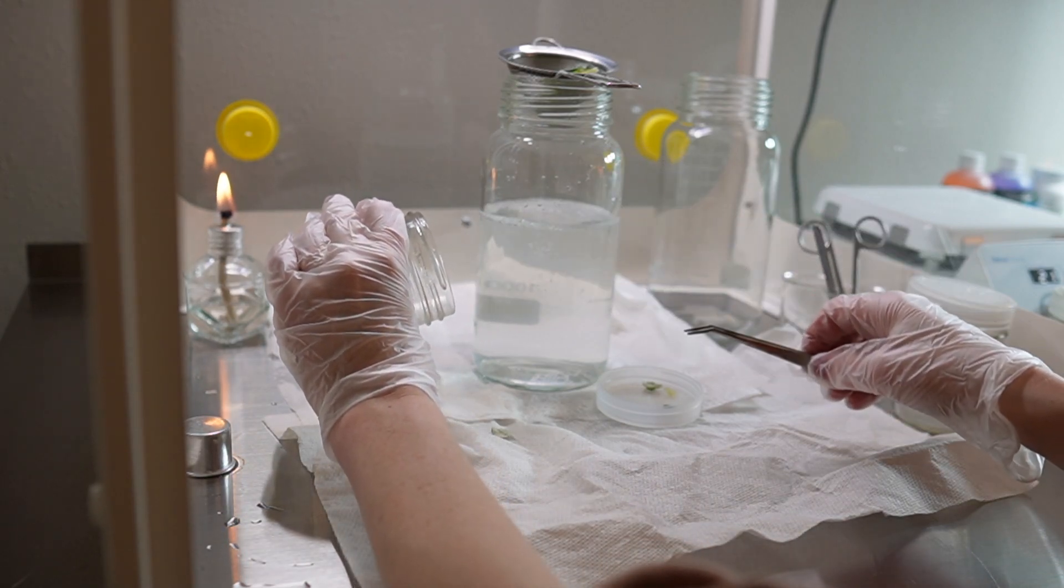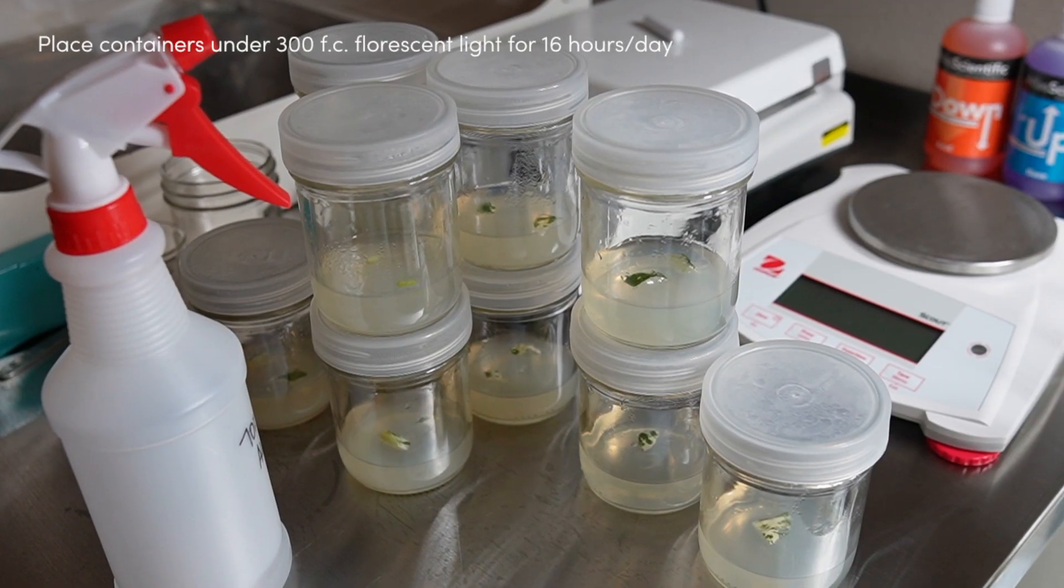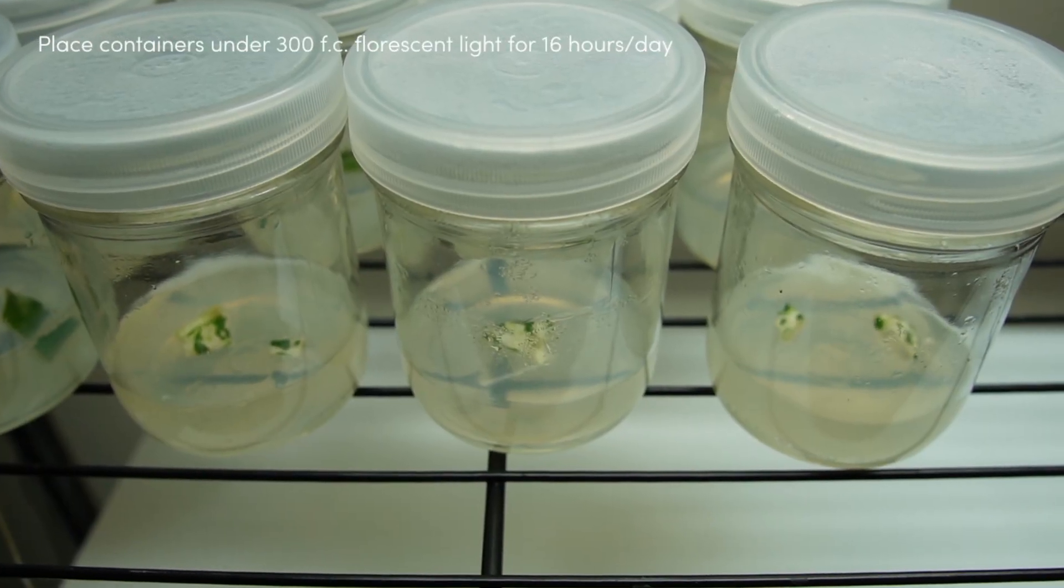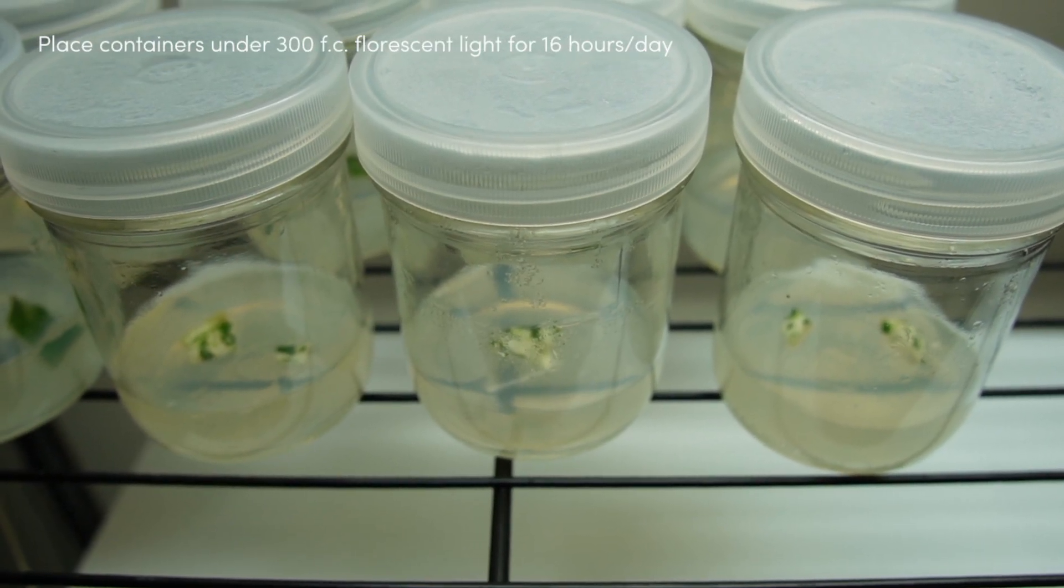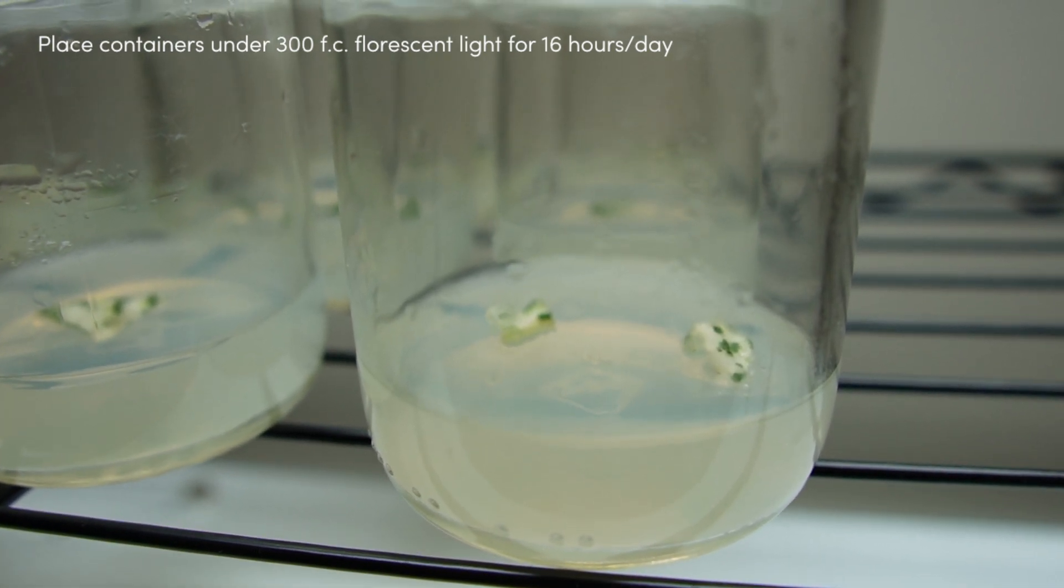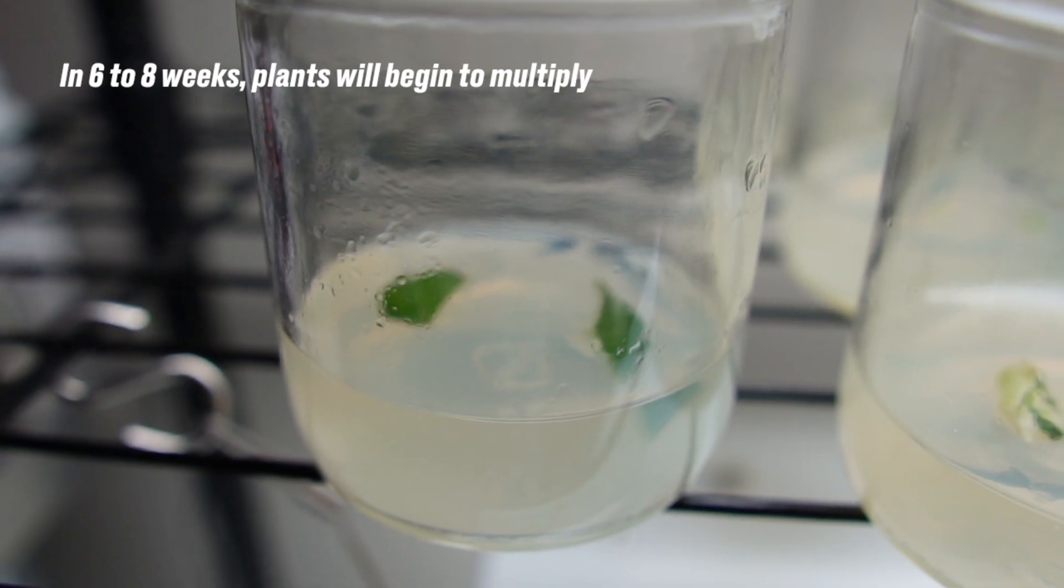And then once I've collected all my jars of explants, I didn't show them all—it would have been boring to watch. But I place them under a fluorescent light, about 3000 lumens or 300 foot candles. That's about the same. And I leave them under there for 16 hours a day, and then in six to eight weeks we should see the beginnings of some multiplication.